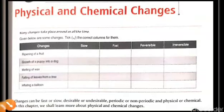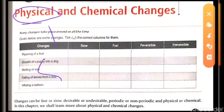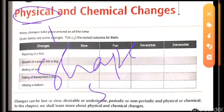Good morning students. This is the video for Class 7, subject Science. We start with our new chapter — physical and chemical changes. Physical means related to shape and size. These are physical properties, so if the changes are in the shape and the size, it will be a physical change.